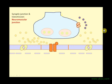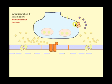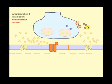Watch this animation carefully to see how neurotransmission occurs. When the action potential reaches the terminal button, it first opens the calcium channels. As the gates open, calcium ions move in. These calcium ions cause the vesicles containing acetylcholine to dock and then burst, releasing the acetylcholine.